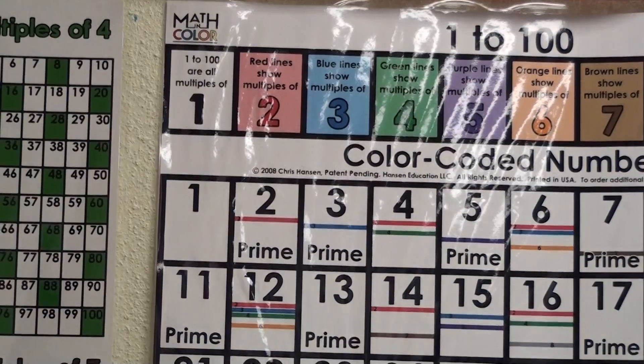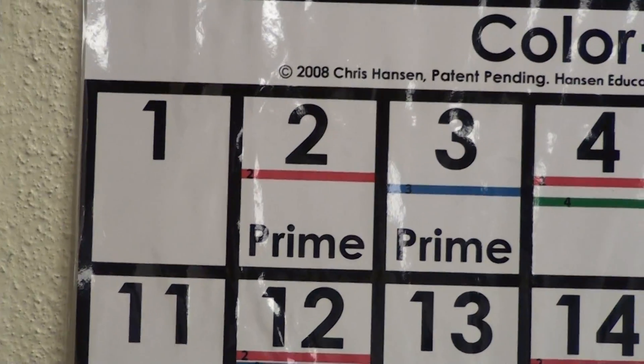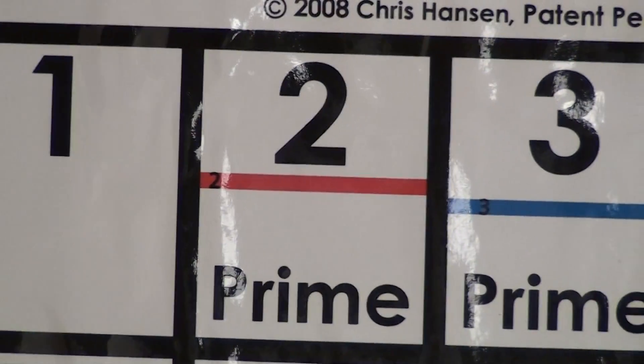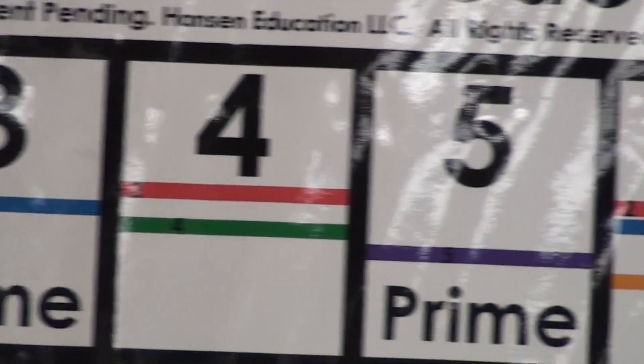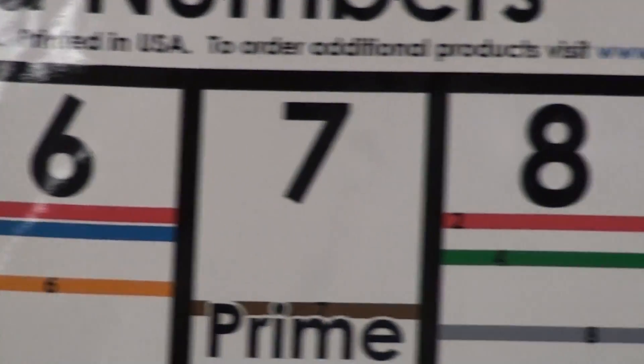As we go to the 1 to 100 chart and look at the even numbers, you'll see a red color bar with the number 2 underneath, showing that it is a multiple of 2.